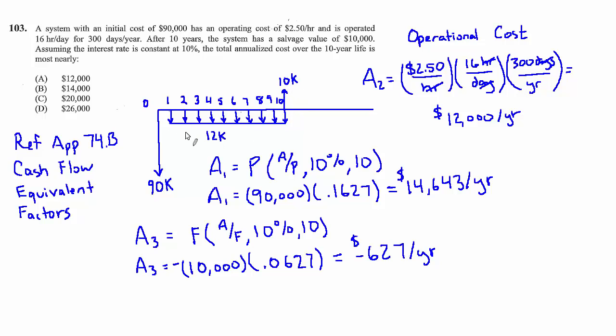Okay, and now that we have all three—the upfront cost, the annualized operational cost, and the salvage value all in an annualized form—we can add them together directly. So we get the 12K plus the 14,643 minus the 627 is $26,016 per year, and that's very close to answer choice D.